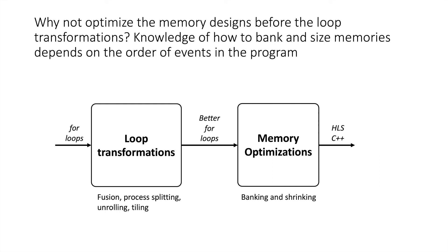Another question is why not do memory optimization before loop transformations. The answer is that to know how to bank and size memories, you need to know the order of events in the program — most memory optimizations exploit locality inherent in that order. So you have to have already done all the loop transformations first. Hopefully that was an interesting whirlwind tour of the high-level architecture of a hardware compiler, and I'll go into more detail on each of those steps in the next video.